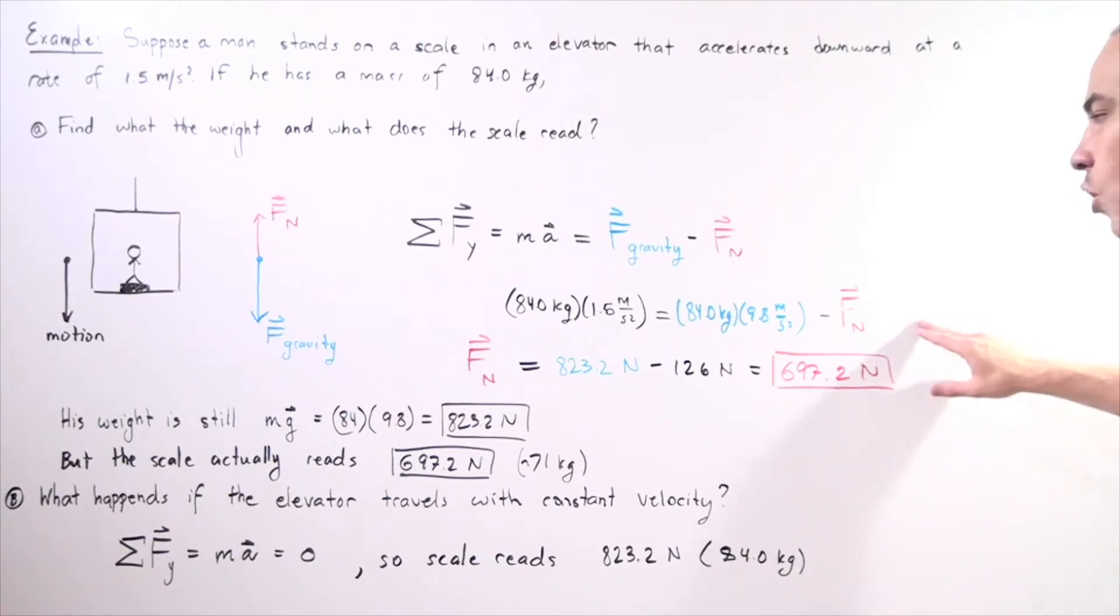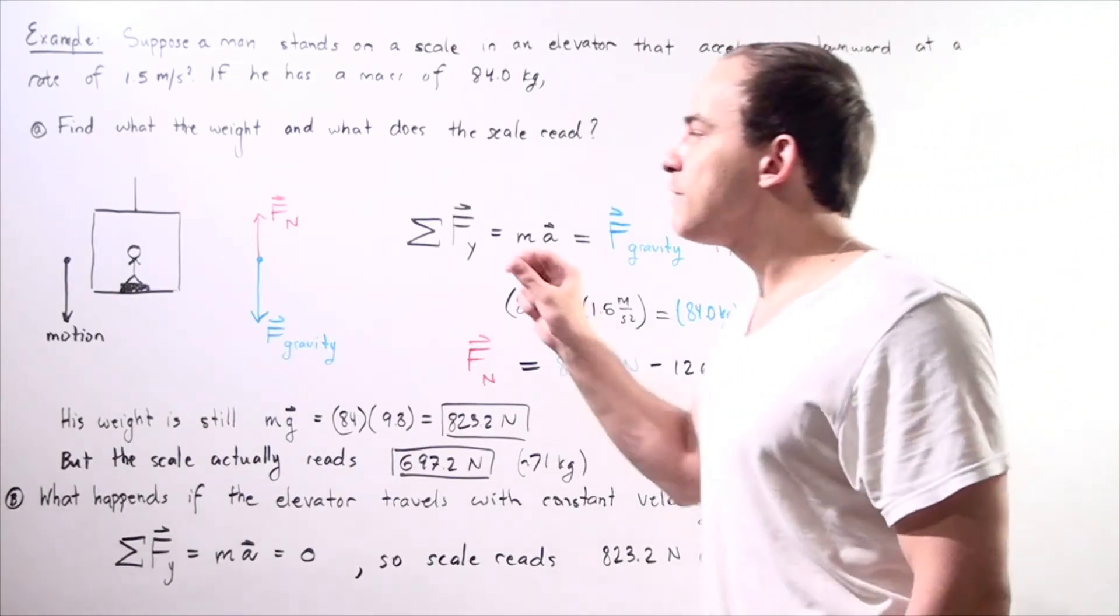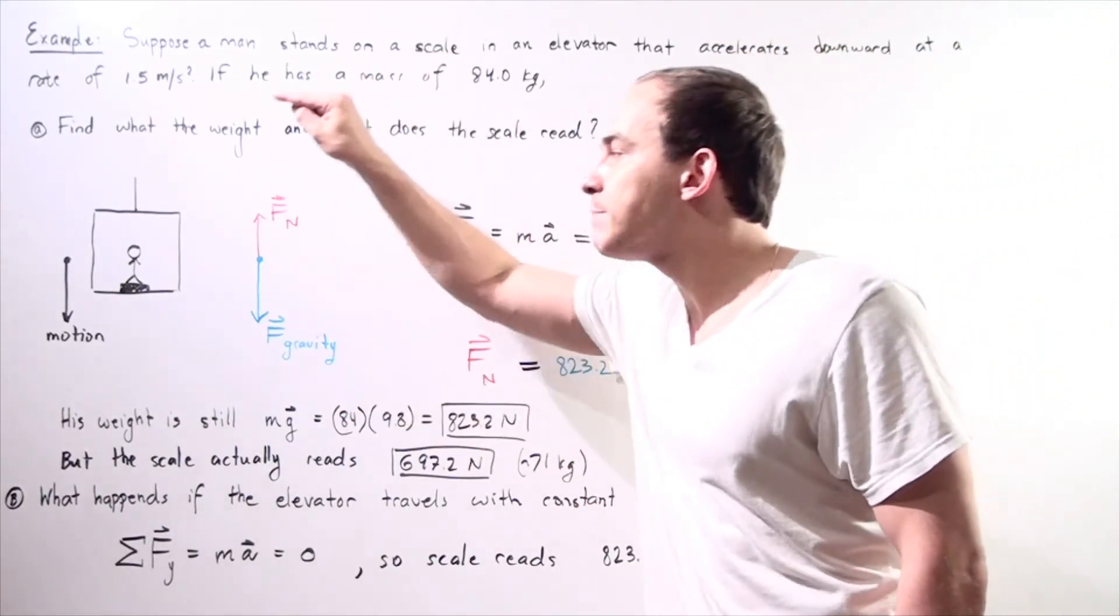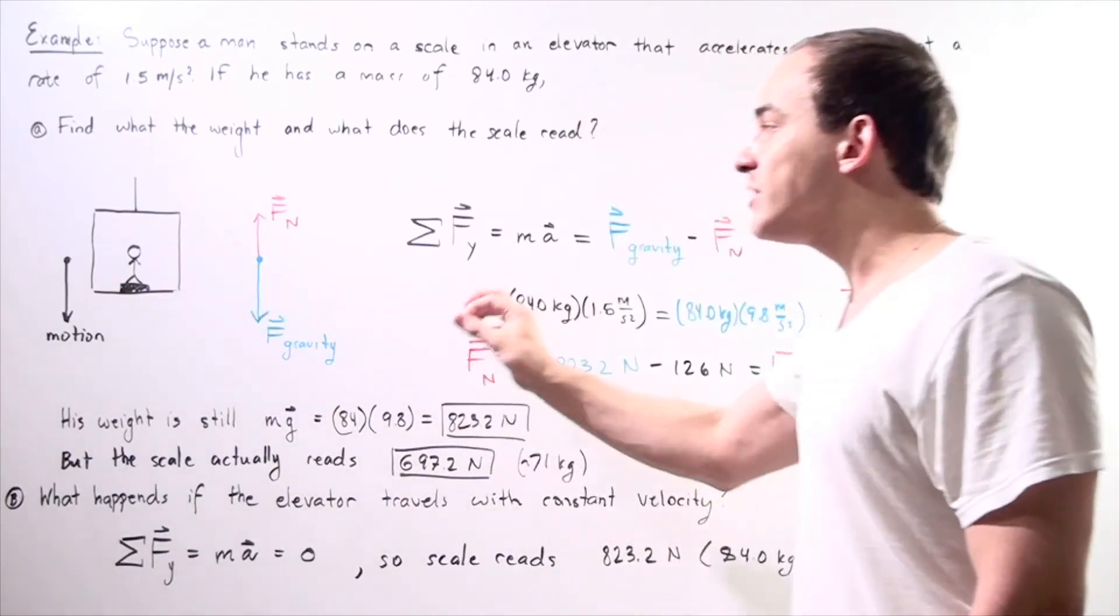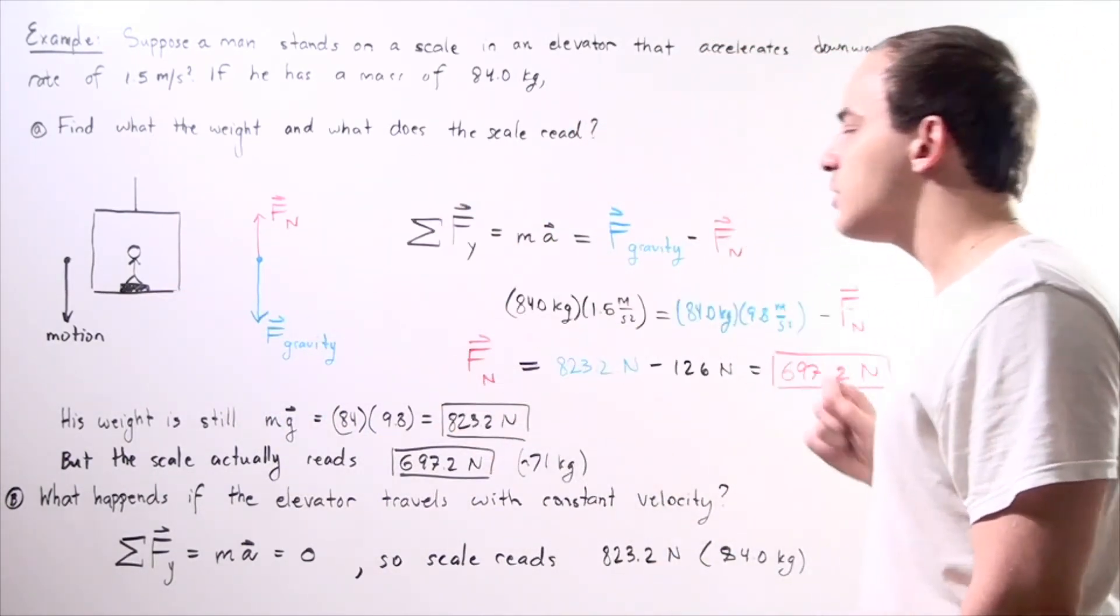This is the normal force of our person. In other words, the normal force is the force that the scale exerts on that person, and what the scale actually reads is the action or reaction force of the normal force.